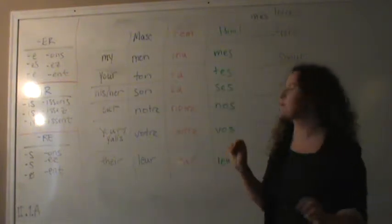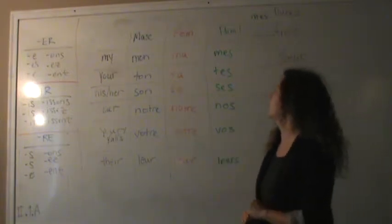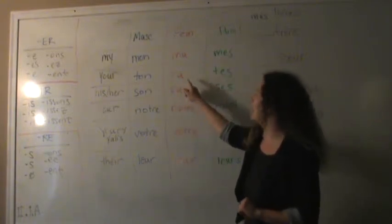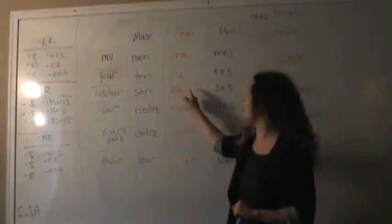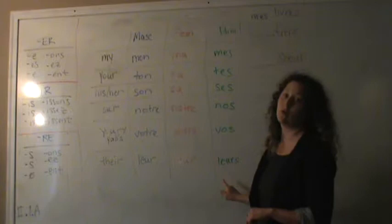This is the possessive adjective chart. I just wanted to go over it with you again just to make sure that you've got it. Mon, ma, mes. Ton, ta, tes. Son, ça, c'est. Notre, notre, nos. Votre, votre, vos. Leur, leur, leur. And if you look at it, all the plurals have S's on it. That's really convenient.